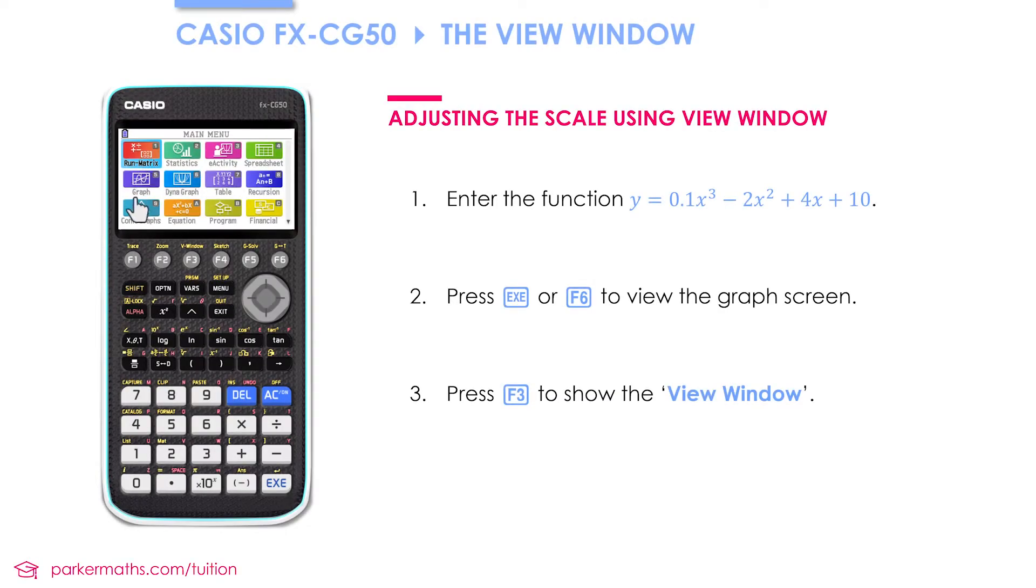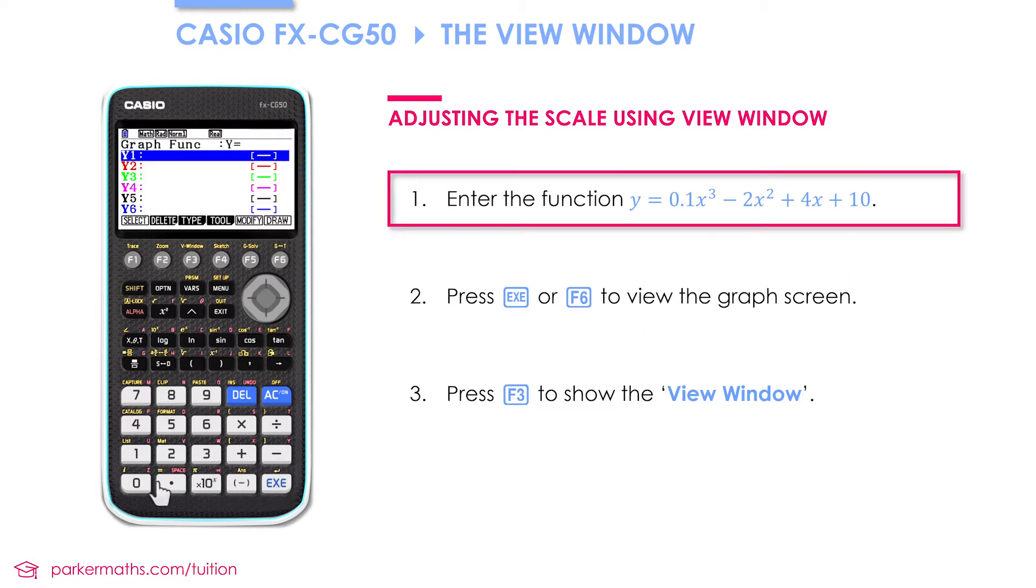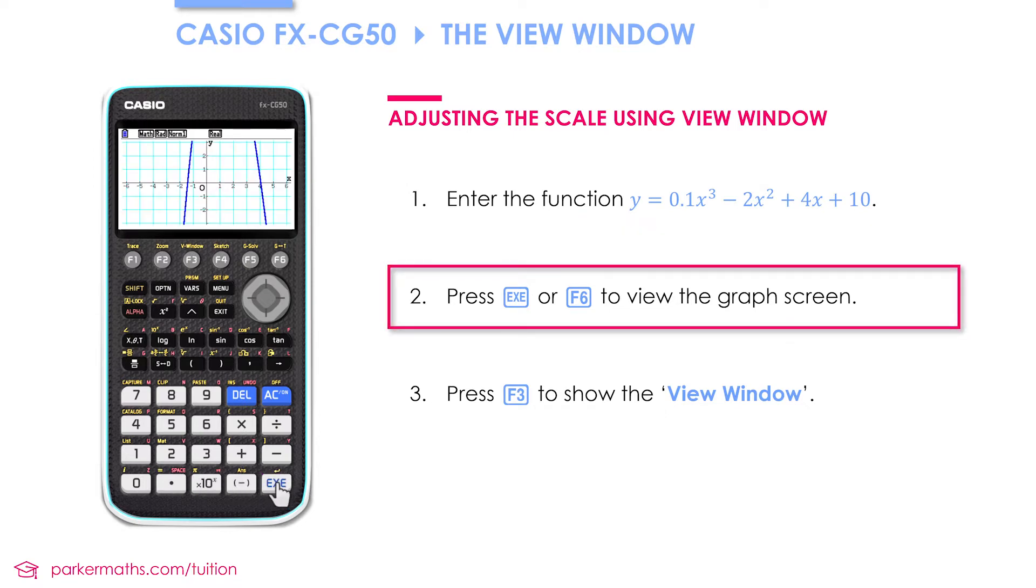From the main menu we're going to enter graph mode number five. We're going to enter our function which is 0.1x³ - 2x² + 4x + 10. Then we'll press exe to go into the graph view, and at the moment we have a graph which looks like it goes off the screen.